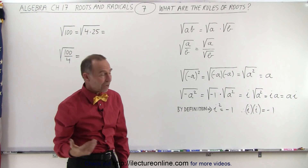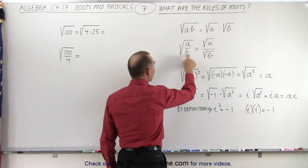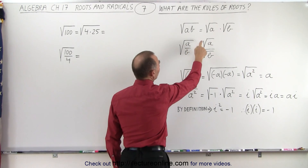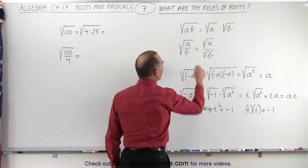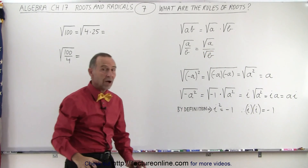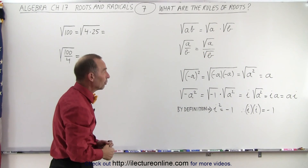Or, if we have a fraction — the square root of A divided by B — that can be written as the square root of A divided by the square root of B, which often makes it a lot easier to find the square roots.